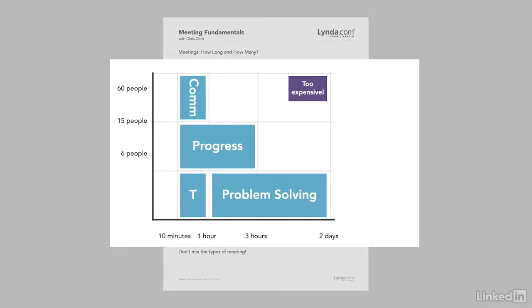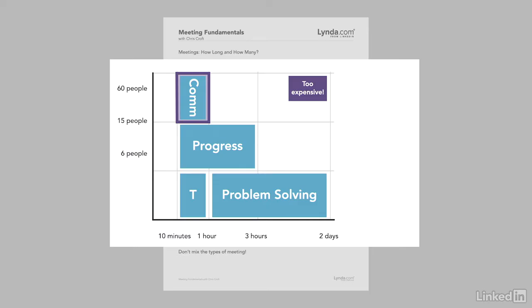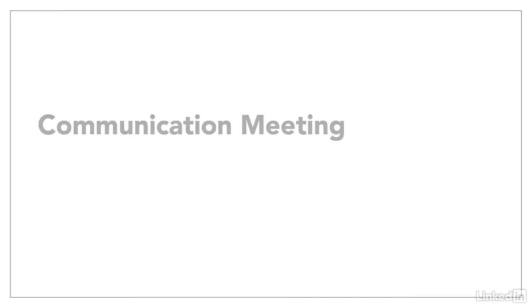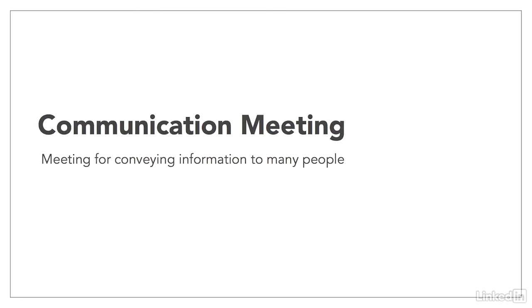The largest number of people would be at a communication meeting, where you want to tell everybody the same message — the more people the better. In quite a short time, one hour maximum on my diagram. This meeting isn't for discussing things; it's just a tell meeting. It's not very democratic, but even just being told what's going on would be a big step forward in some companies.